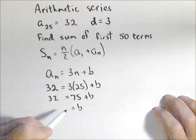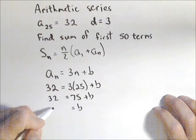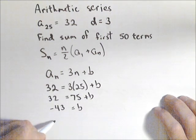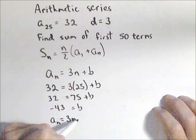And subtracting 75 from both sides, I'm gonna get that b is negative 43. So I have my aₙ for the nth term. So this term is 3n minus 43.